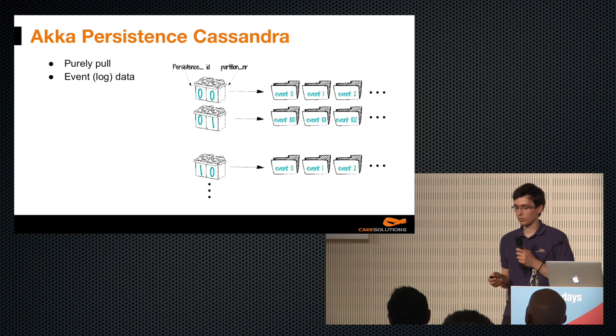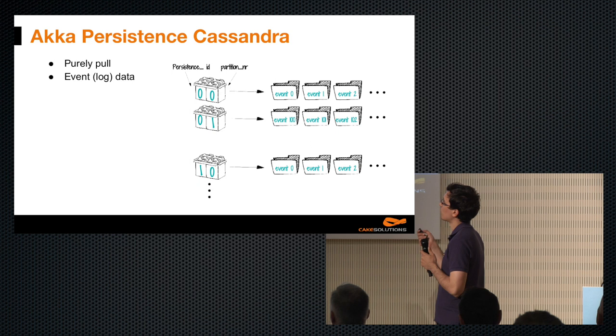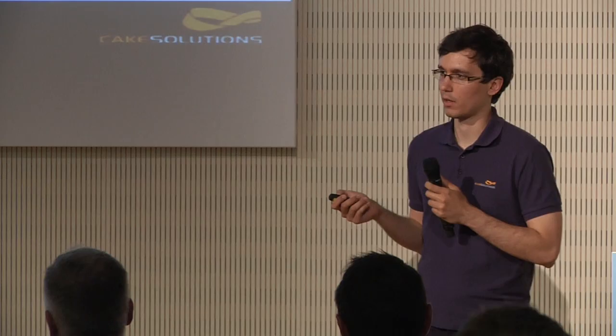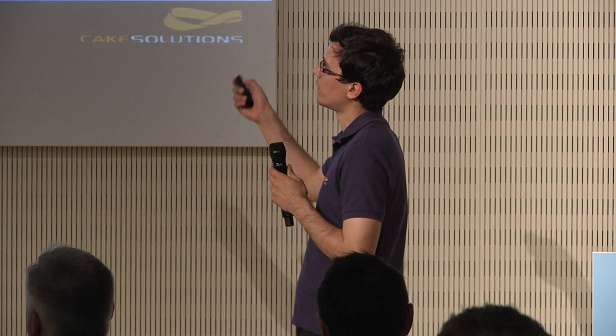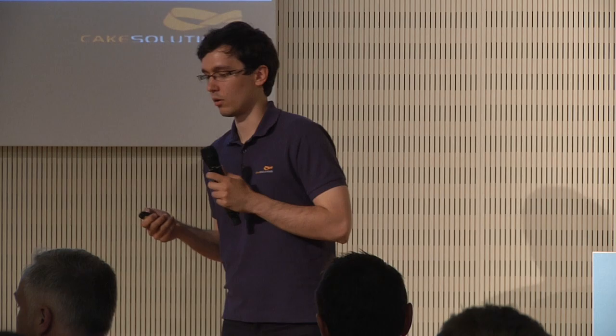Today we'll talk about the implementation of Akka Persistence in Apache Cassandra. I'll briefly explain the data model and how the event-source journal is stored in Cassandra. Cassandra is a highly scalable and available distributed database. It uses concepts such as sharding and replication to hold its data.